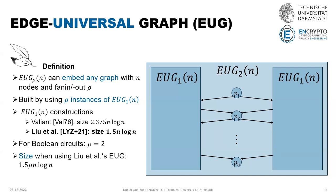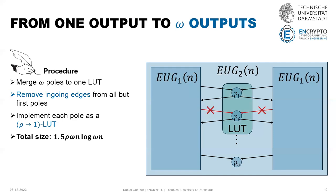Now we want to extend this construction to ω outputs. What we do is merge some of the poles into a lookup table. For example, when we have a ρ-input and two-output lookup table, we merge two poles, and each pole is implemented as a ρ-input one-output lookup table. The second pole takes the same inputs as the first pole, so we don't need those extra connections. The two outputs are computed independently, giving two independent outputs for the same inputs.